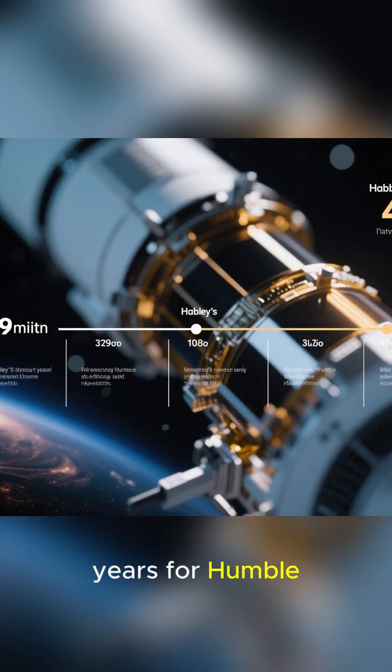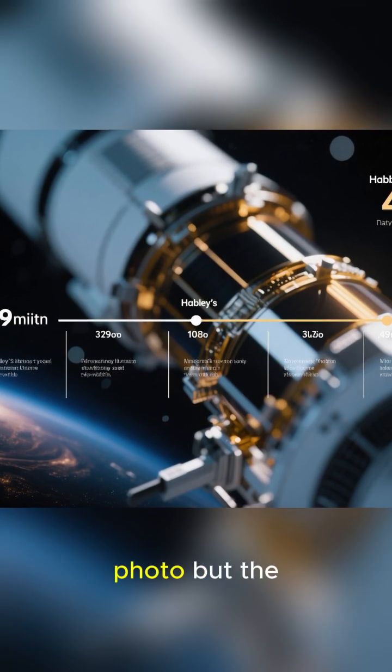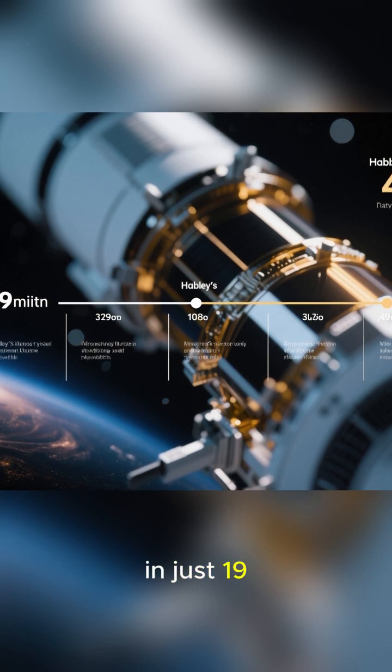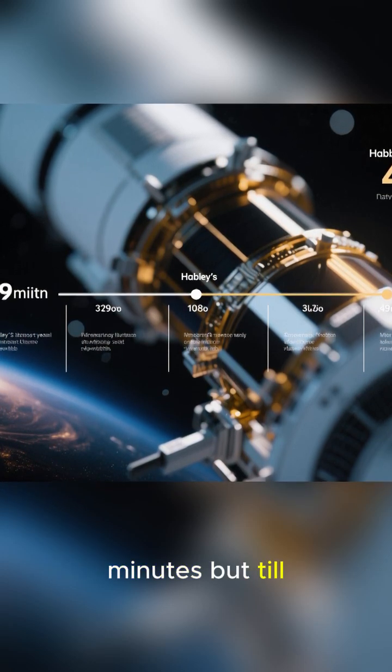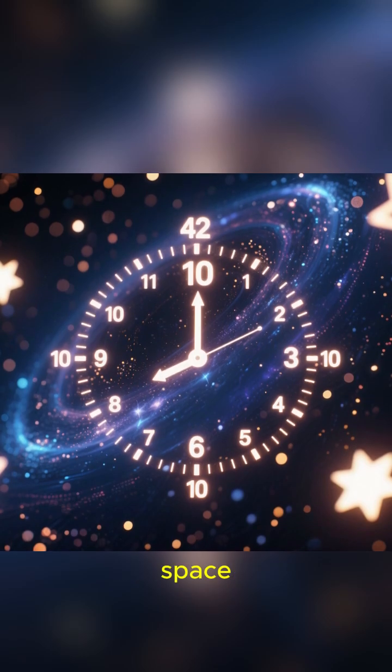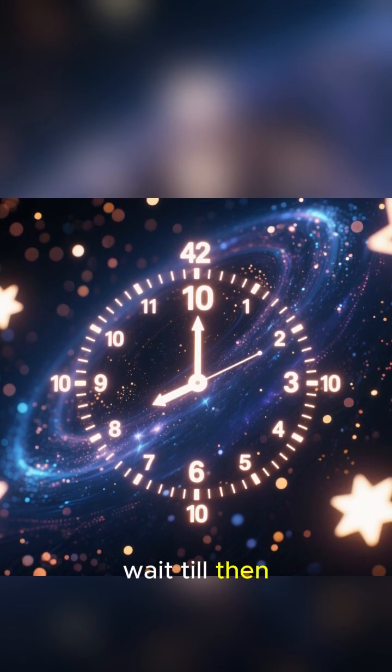For example, it took 3 years for Hubble to take this photo, but the Nancy Grace Roman Space Telescope can do it in just 19 minutes. But till this new space telescope is ready, it will take some time. Can you guys wait till then?